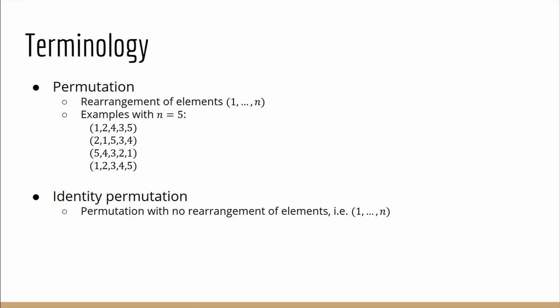A bit of terminology first before we proceed. Permutation here will be interpreted as a rearrangement of the elements in the n-tuple 1 to n. So here are some examples of a permutation when n equals 5. Note that the last one is also valid and in particular it is an identity permutation, the permutation where the elements aren't rearranged at all.